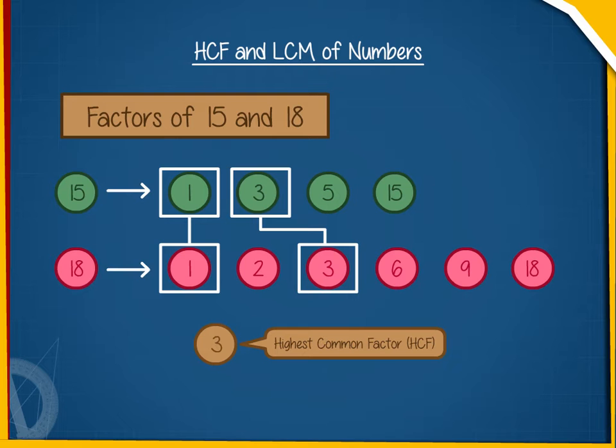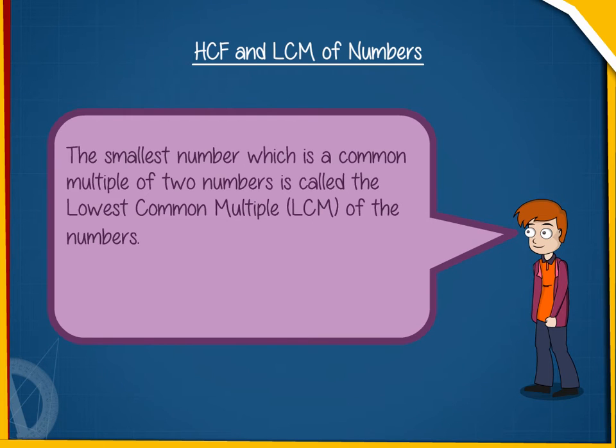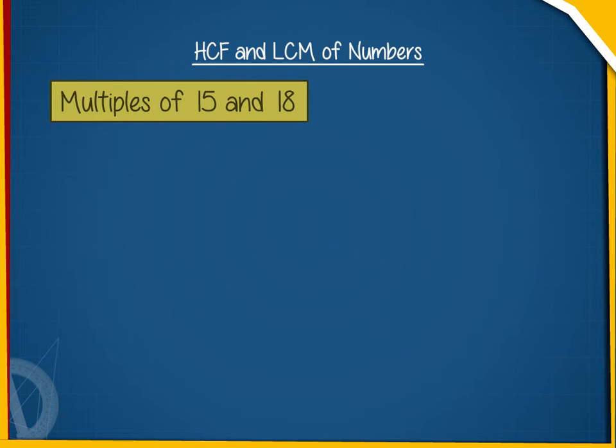The smallest number which is a common multiple of two numbers is called the lowest common multiple, or LCM, of the numbers. Let us compare the multiples of 15 and 18.